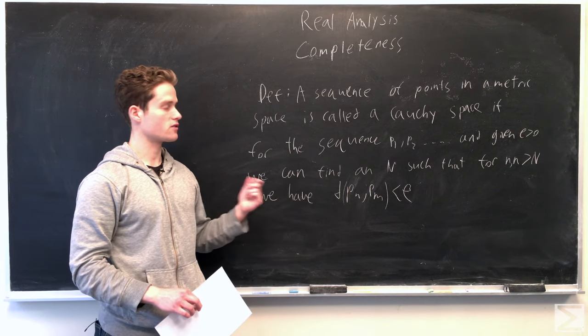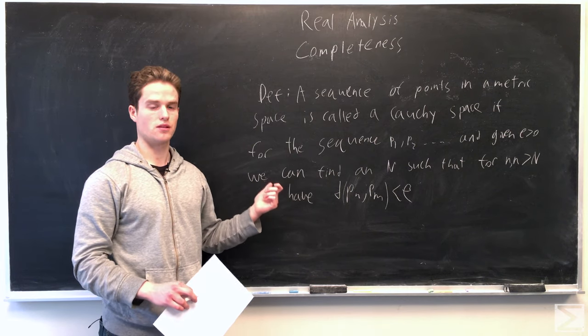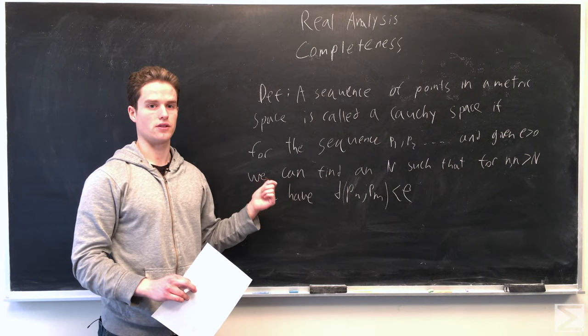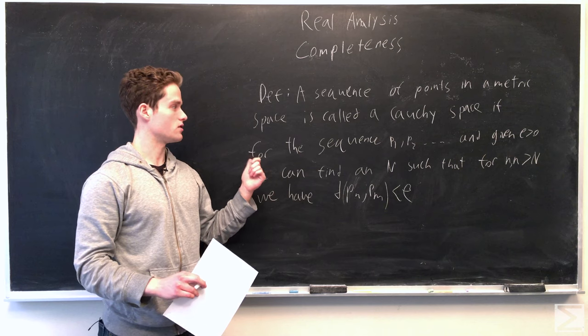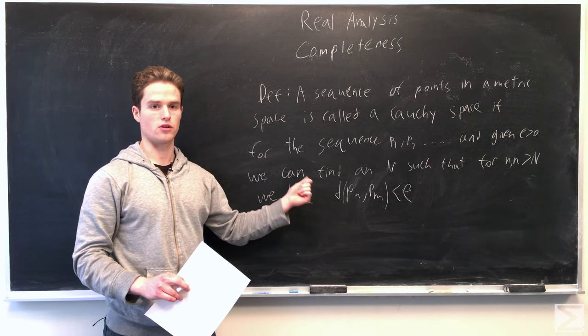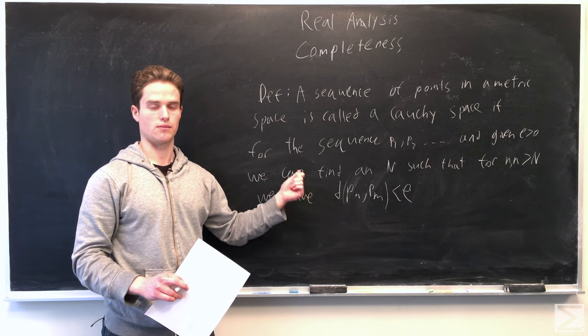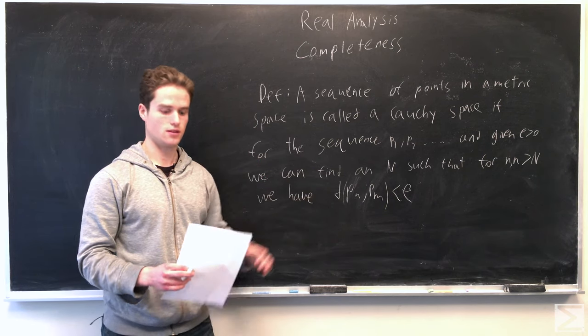And we're going to say a metric space is complete if every Cauchy sequence — every sequence with this property — converges to a point in the metric space.